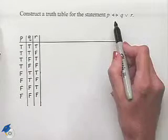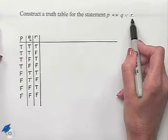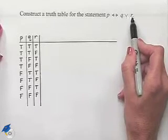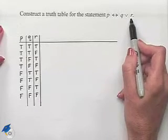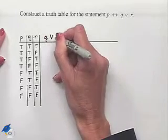Now we're going to figure out the truth table for the rest of the statements. We're going to first of all notice that we have on the right-hand side of this biconditional the disjunction, Q or R.